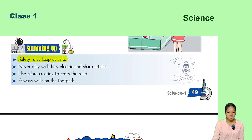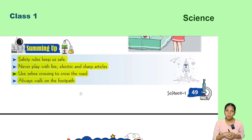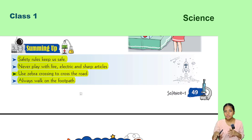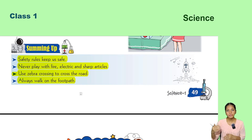Safety rules keep us safe. Never play with fire, electric devices, or sharp articles. Use zebra crossing to cross the road. Always walk on the footpath. These rules keep us safe.